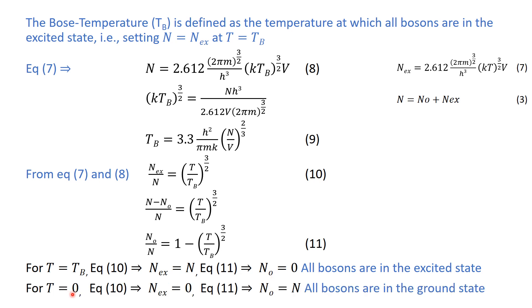For T equals zero, equation 11 shows that the excited number of particles will be equal to zero, and equation 10 shows that the ground state particle number will be equal to N — that is, all bosons will be in the ground state. So the transition from the normal state toward the Bose-Einstein condensate starts at temperatures below the Bose temperature, and at absolute zero the material is completely converted into the Bose-Einstein condensate. Between absolute zero and the Bose temperature, there is a mixture of the Bose-Einstein condensate and the normal state.